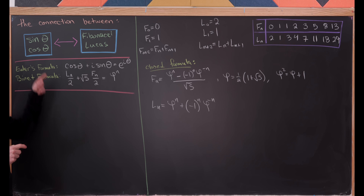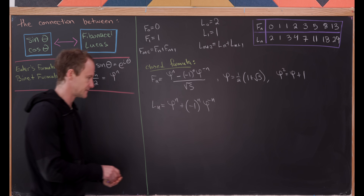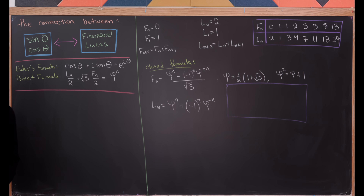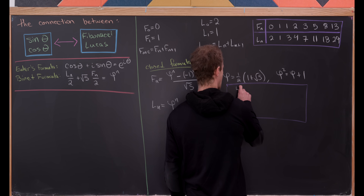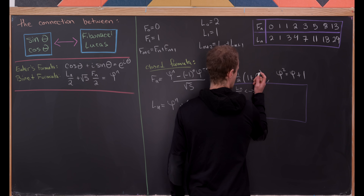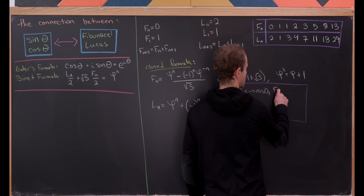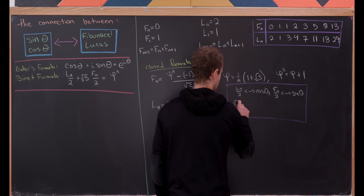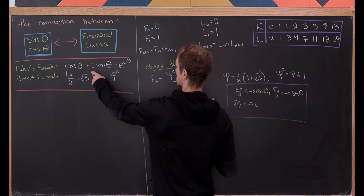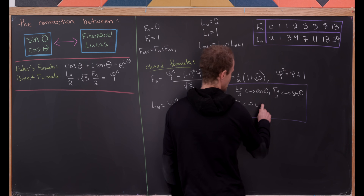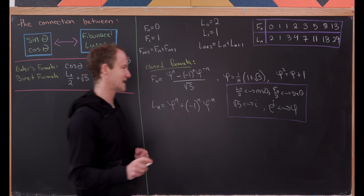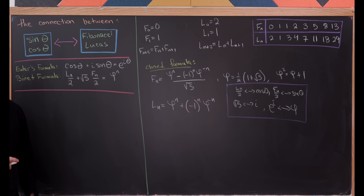Let's talk about who's playing what role here. Lucas numbers over two are playing the role of cosine, and Fibonacci numbers over two are playing the role of sine. The square root of five is playing the role of i — notice here we have an i, and there we have a square root of five. And e to the i is playing the role of φ. That's our translation from one world to the other.